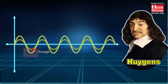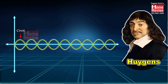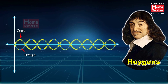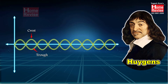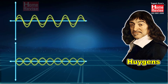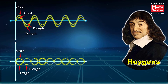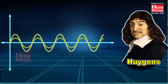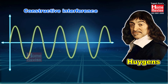Also, the trough of one wave can get superimposed over the trough of another wave. It is also possible that the crest of one wave gets superimposed over the trough of another wave, or the trough of the first wave gets superimposed over the crest of the second wave. So there are four possibilities: crest-crest, trough-trough, crest-trough, and trough-crest. From these four possibilities we get two types of interference: constructive interference and destructive interference.